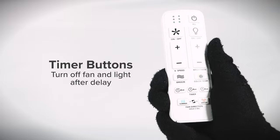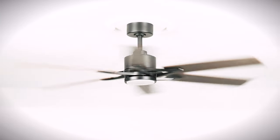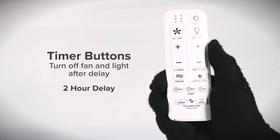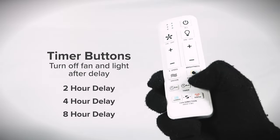Press the timer button to automatically turn the fan and light off after a certain amount of hours have passed. You can set the timer for 2 hours, 4 hours, or 8 hours.